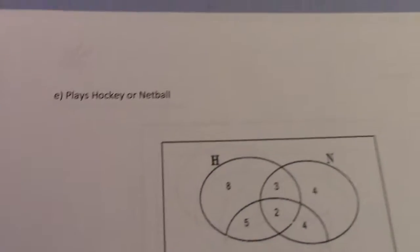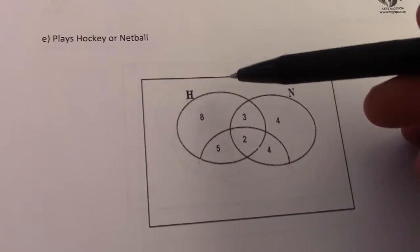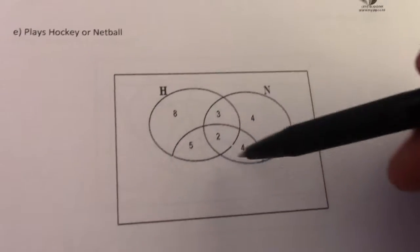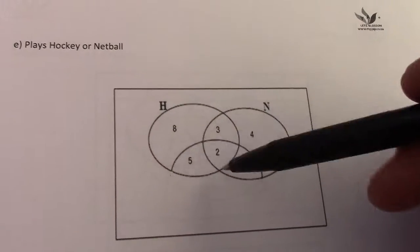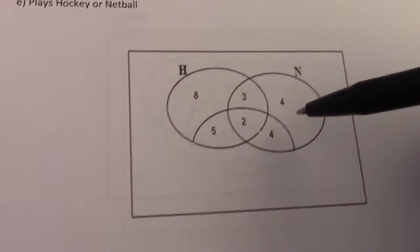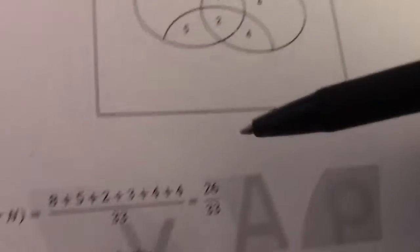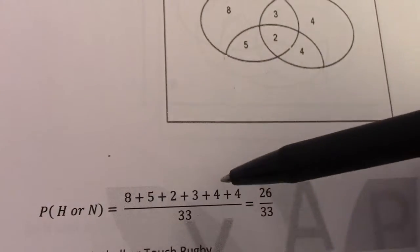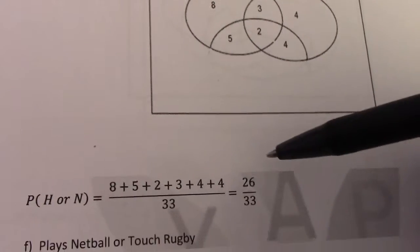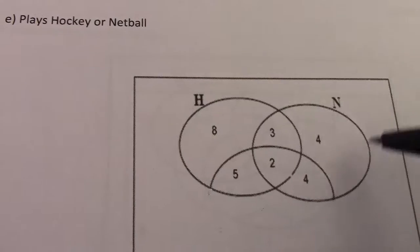Now moving to a more complicated problem — hockey or netball. If I want hockey or netball, I look at the two circles for H and N and add everything in them. I remove the touch rugby-only region. So it's 8 plus 5 plus 2 plus 3 plus 4 plus 4, which gives me 26 over 33.